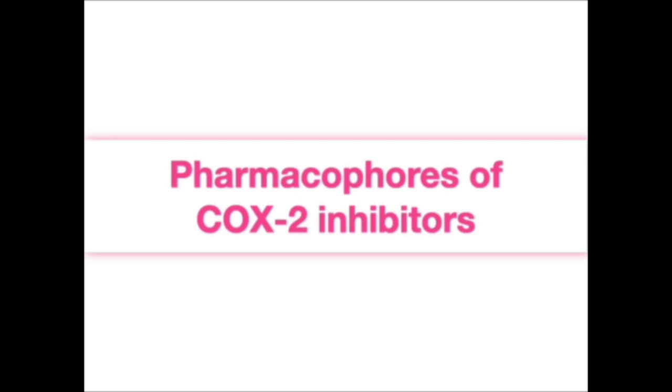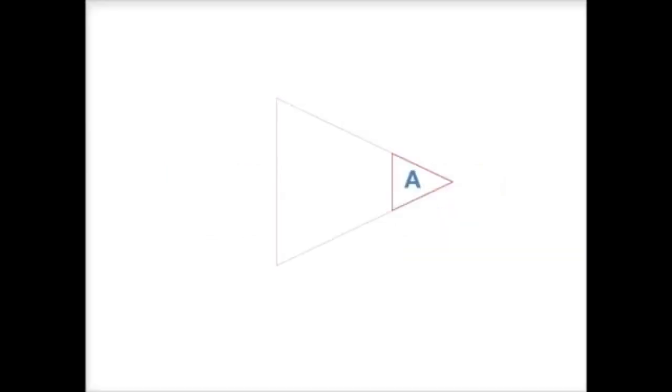The framework of COX-2 inhibitors hinges upon a triangular framework. So at the edge of the triangle, at the tip of the triangle, you have, let me just label as A for example, and two Bs.